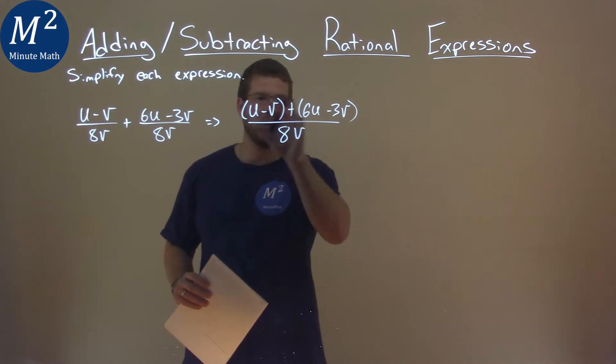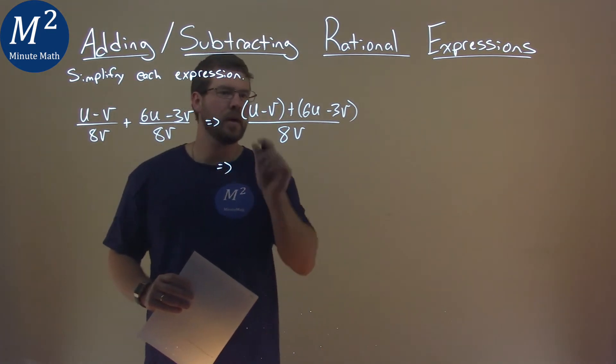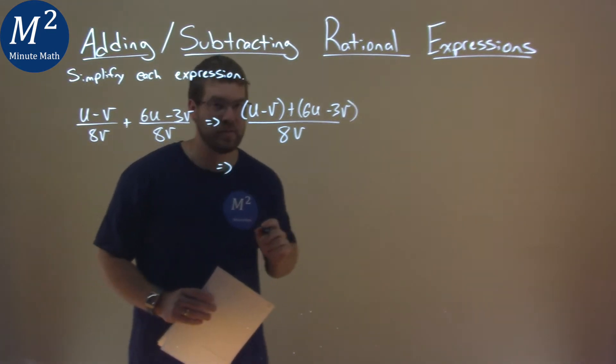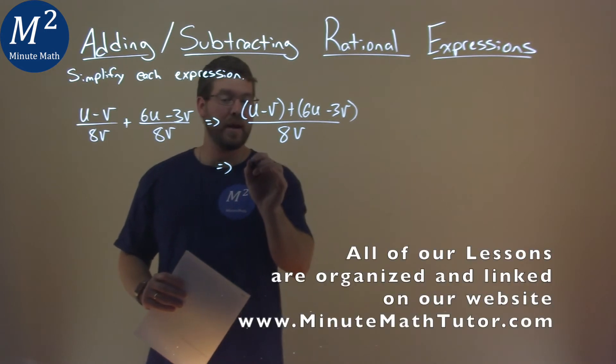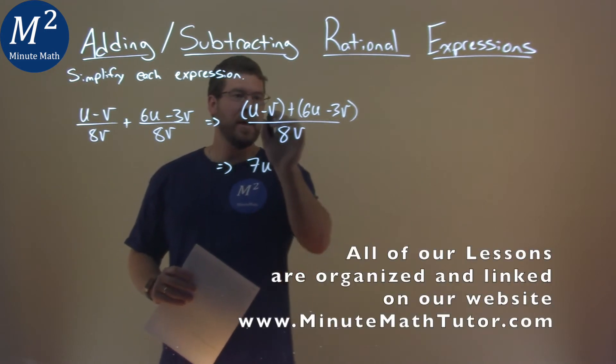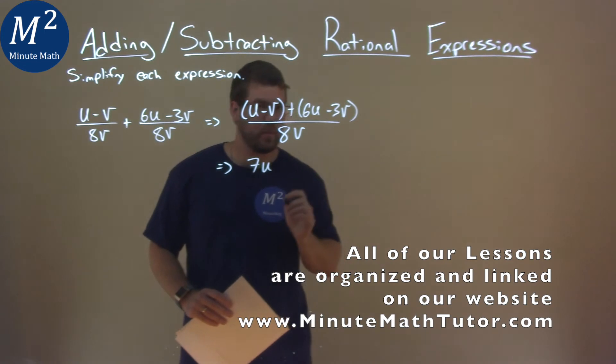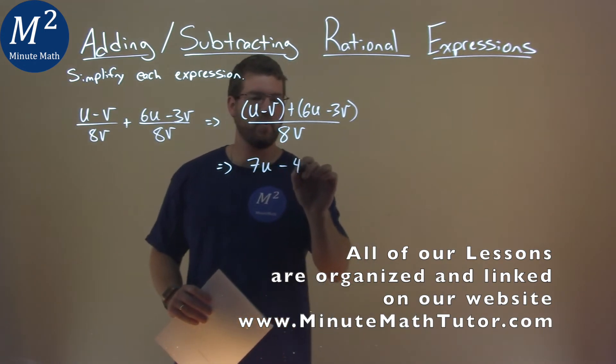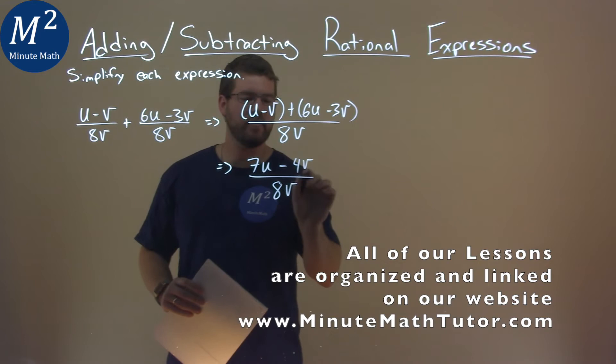Now, from here, we can combine our like terms in the numerator. So, u and 6u, when added, is 7u. And minus v and minus 3v is minus 4v, and that's going to be over 8v.